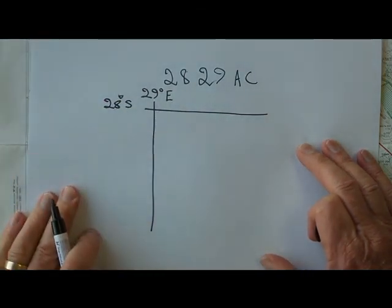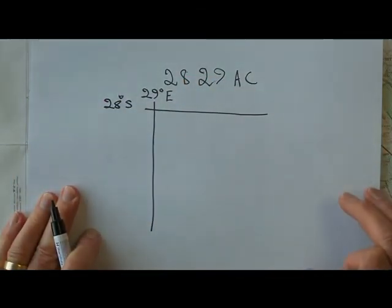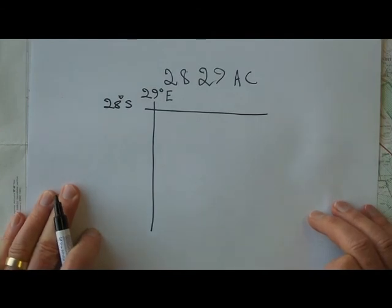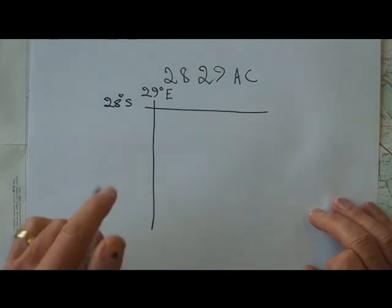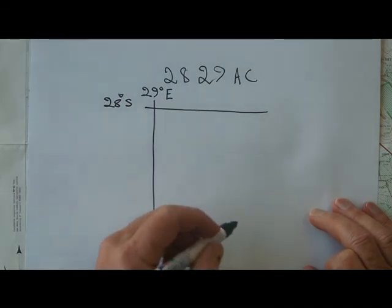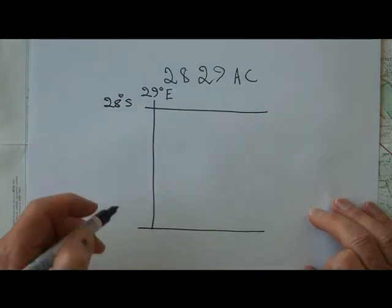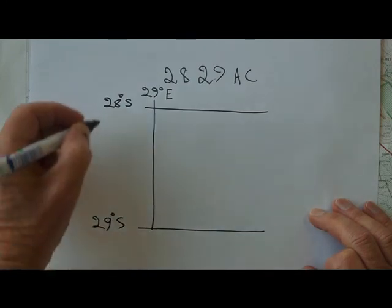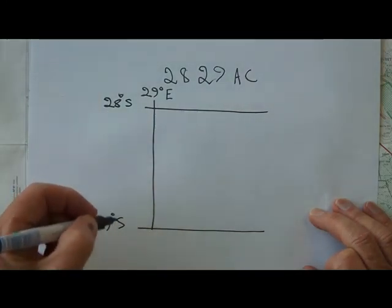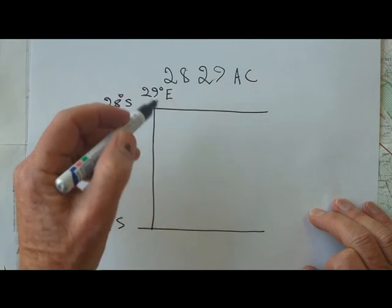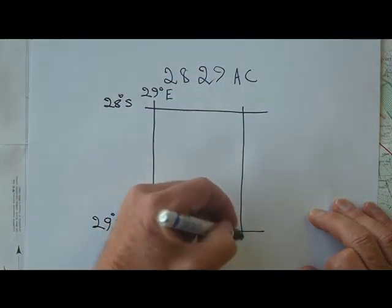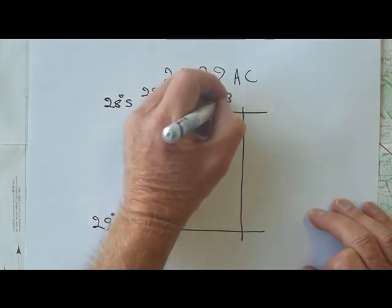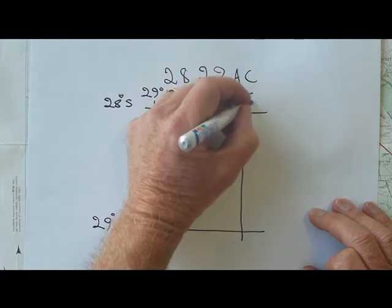We don't have to mention the south and east in the number because the whole of South Africa is south and east. Then the southern edge over here is defined by 29 degrees south latitude, of course getting larger away from the equator.